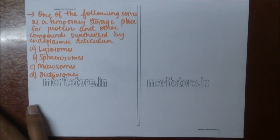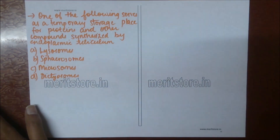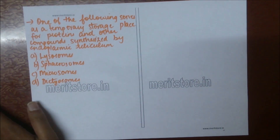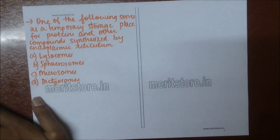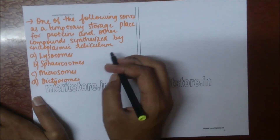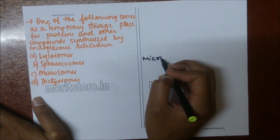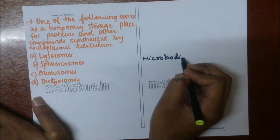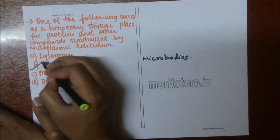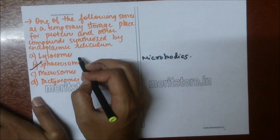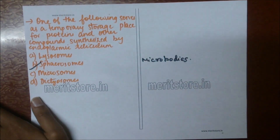The following serves as a temporary storage place for proteins and other compounds synthesized by the endoplasmic reticulum: A) lysosome, B) spherosomes, C) microsomes, D) dictyosomes. Proteins and other storage products are found in spherosomes, also known as microbodies like peroxisomes and glyoxysomes, which help in temporary storage. Lysosomes are also known as suicidal bags and are involved in autolysis or phagocytosis.